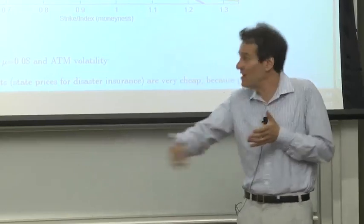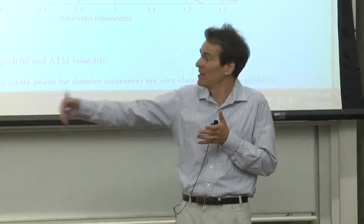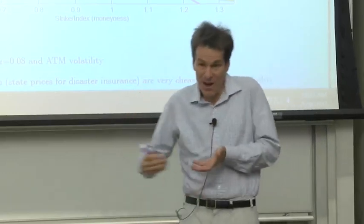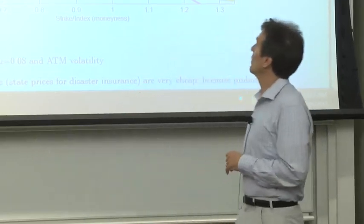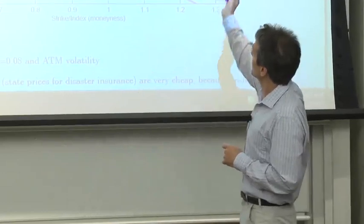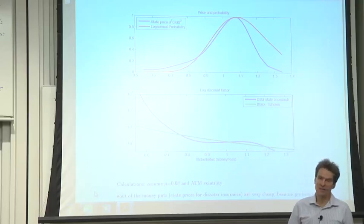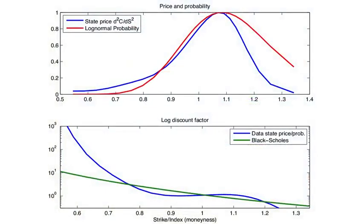The probability of getting way out of the money, of a big fall in stocks, is low, and so the state price for buying insurance against that event is low, as it looks like. But I also fit in the red line the log-normal probability distribution underlying Black-Scholes formula. That looks about the same, but about doesn't cut it in finance.